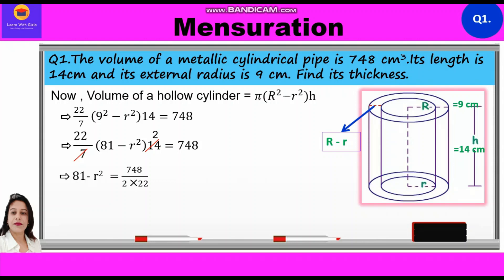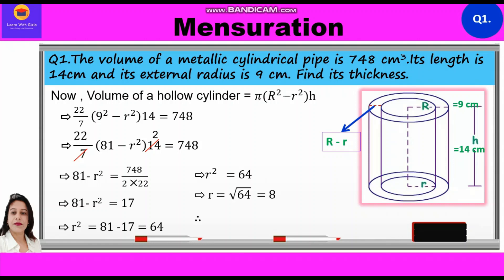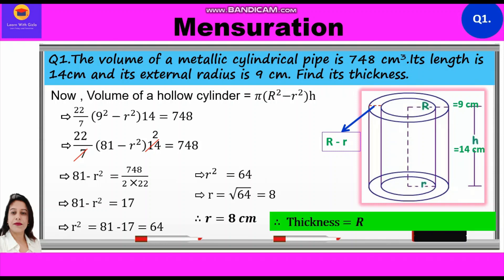So 81 − r² = 17, which gives r² = 81 − 17 = 64. Therefore r = √64 = 8. So the inner radius r = 8 cm. Thickness = R − r = 9 − 8 = 1 cm.